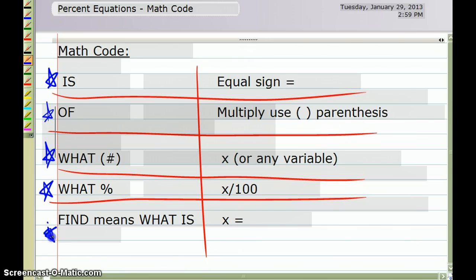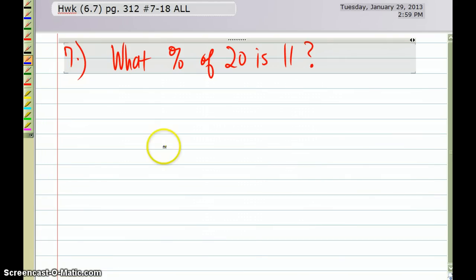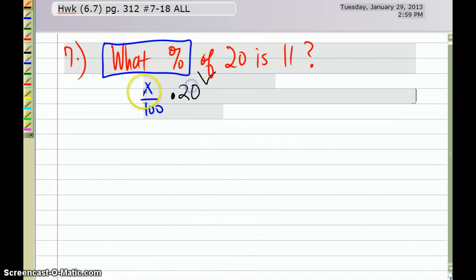Copy that down if you still needed to for your notes. The first question from the homework tonight is 'what percent of 20 is 11?' And I'm going to take each word and interpret that in my math code. So 'what percent' would represent x over 100. 'Of' means multiply, so I'm going to use the multiplication symbol. Of 20, so I'm going to multiply 20 with the x over 100. And then 'is' represents equal sign, so I'm going to write an equal sign, and then 11 after the equal sign. So there's my equation.